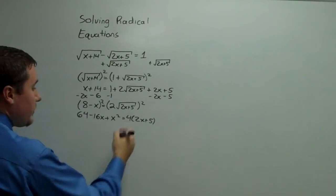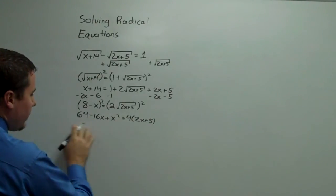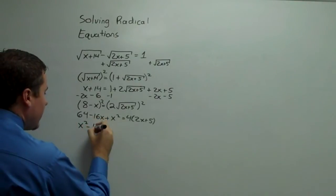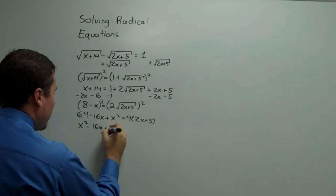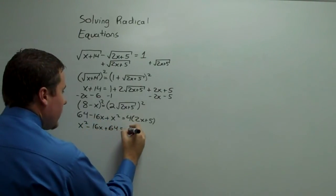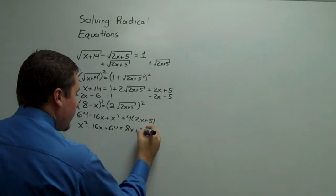So at this point, we distribute, and let me reorder this into a nice friendly x squared minus 16x plus 64 equals 8x plus 20.